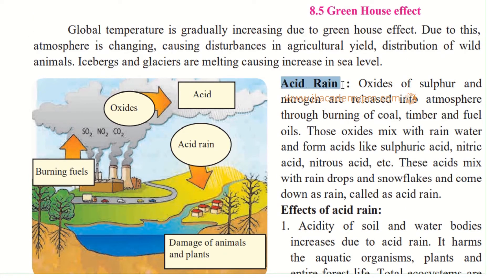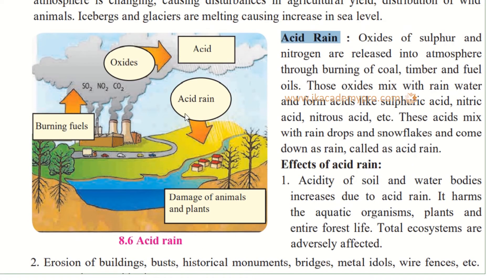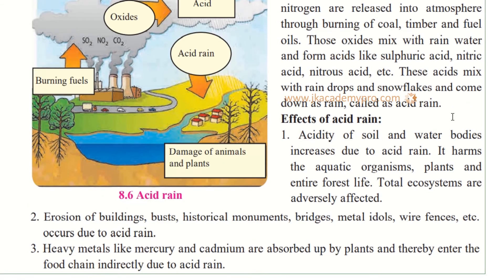Now let's study acid rain. Oxides of sulfur and nitrogen are released into the atmosphere through burning of coal, timber, and fuel oils. These oxides mix with rainwater and form acids like sulfuric acid, nitric acid, and nitrous acid. These acids mix with raindrops and snowflakes and come down as rain, which is called acid rain. This damages animals and plants.